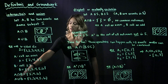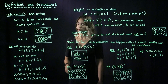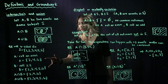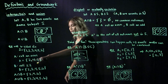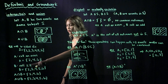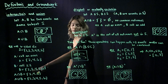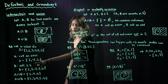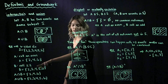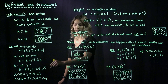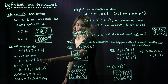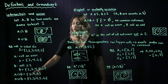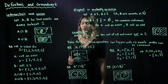So for A intersect B, we need to see which elements are in both A and B. Starting with 2: it's in both, so it's in the intersection. 3 is only in B, so it's not in the intersection. 4 is in both, so it is. 5 is not in both, so it's not. 6 is in both, so it is. Therefore A intersect B is {2, 4, 6} — the common elements.